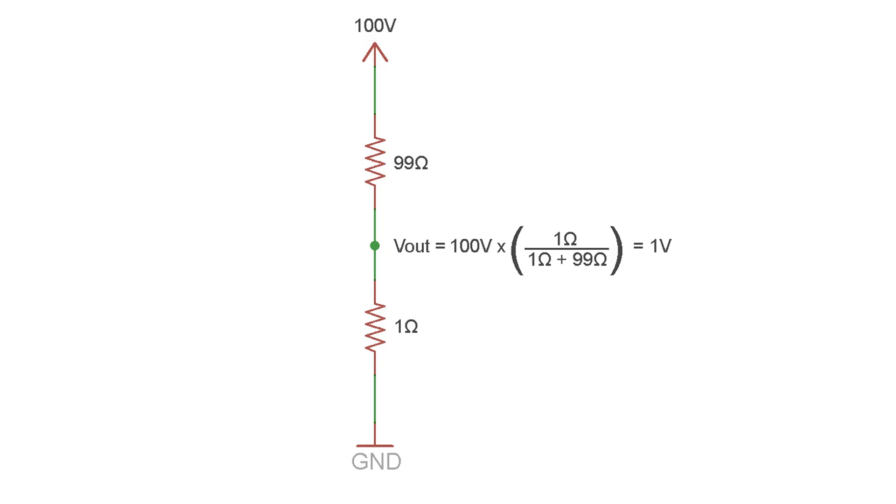You might have noticed that I'm using massively different resistance values here, sometimes a few ohms, sometimes a few mega ohms. But it is ultimately the ratio of the resistance values that determines the output voltage.